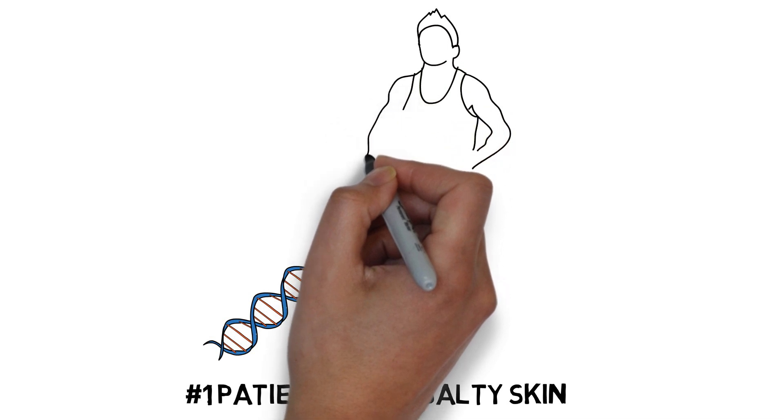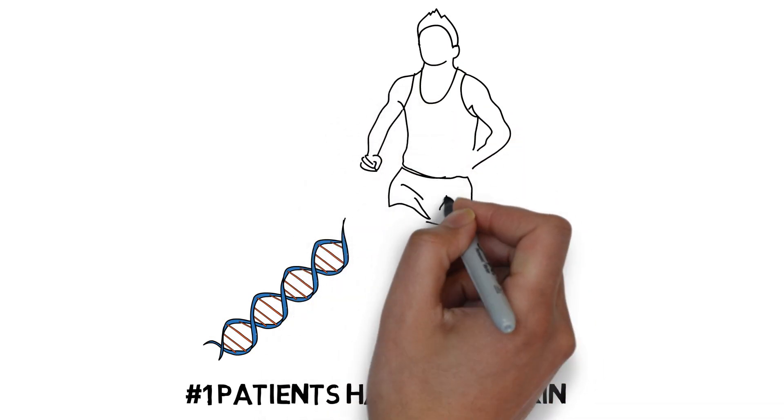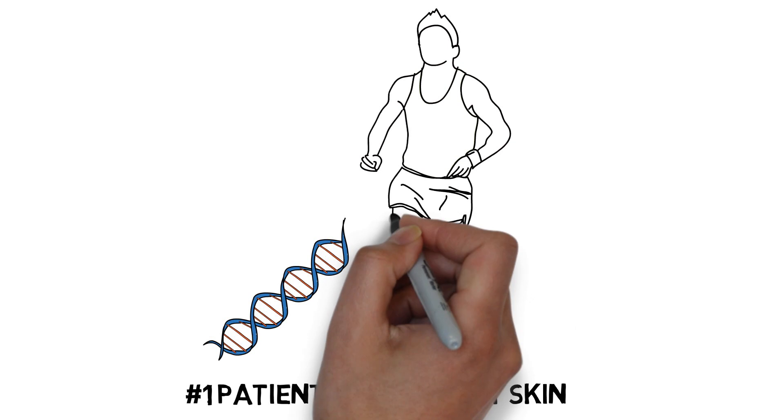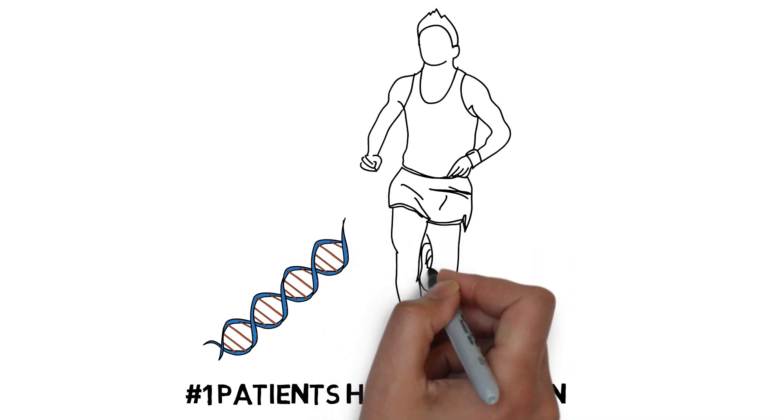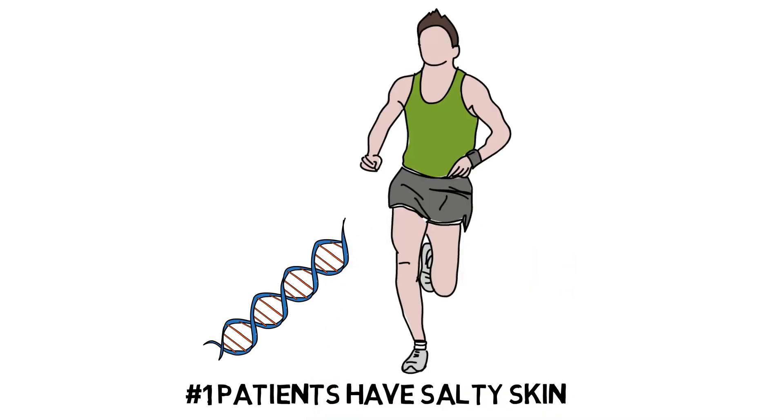When mutations occur, normal salt absorption is disrupted, so instead of sweating and having the salt being reabsorbed, the salt stays outside of the body and dries, causing salty skin. This lowers the amount of salt in the body, which can contribute to other problems like heat stroke.